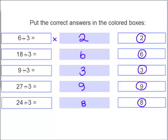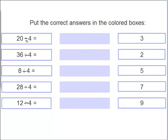Let's do some more. 20 divided by 4 equals what? 20 divided by 4 equals 5.